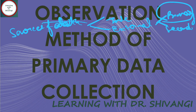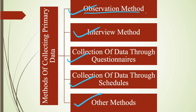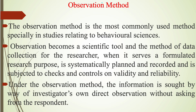Coming to the main topic, which is observation method of primary data collection, we first need to know the different types of data collection methods in the primary method. These are: first, observation method; second, interview method; third, collection of data through questionnaires; fourth, collection of data through schedules; and the last one is other methods.